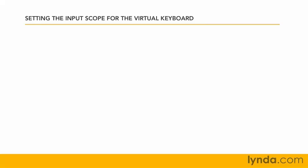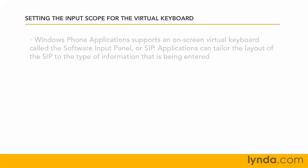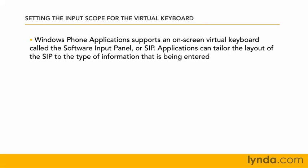In this lesson, we'll see how to ease the typing of characters for certain kinds of situations when you're using a Windows Phone. Windows Phone applications have an on-screen virtual keyboard called the Software Input Panel, or the SIP. Applications can tailor the way that this keyboard is laid out so that based on the type of information being typed in, the process can be made a lot simpler.